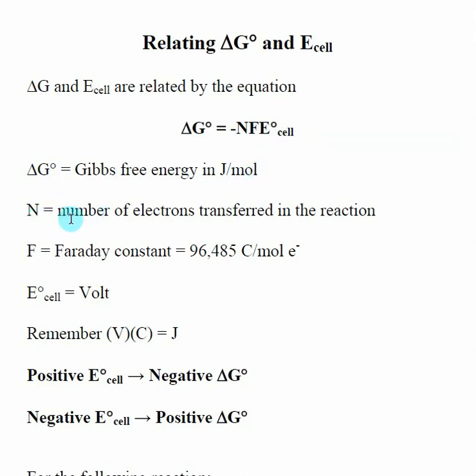N is the tricky part, which is the number of electrons transferred in the reaction. So to be able to convert delta G into E cell or vice versa, I need to be given the reaction that is going on inside of my electrochemical cell. And we'll talk about how do we find N in just a second.